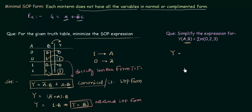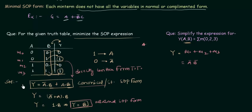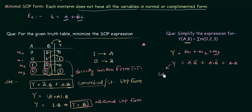For question number 2, we simplify the expression for M(0, 2, 3). We first write the canonical SOP form. From the truth table with two variables: 00 is M0, 01 is M1, 10 is M2, and 11 is M3. For M0, A is 0 and B is 0, so we write A complement B complement. For M2, A is 1 and B is 0, so we write A B complement. For M3, A is 1 and B is 1, so we write A and B. This gives the canonical SOP form: A complement B complement + A B complement + AB.